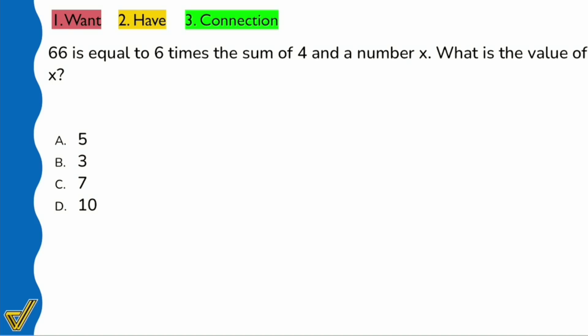Here's a short one but a great one. We want to find the value of x, and the description we're given is: 66 is equal to 6 times the sum of 4 and a number x. This is one of those questions that although it seems short and might feel easy, it's not quite so because you can make one simple mistake.